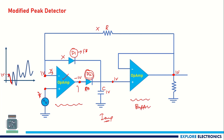As the input reaches the next peak, diode D2 becomes forward biased again and D1 becomes reverse biased. This process continues and finally we can identify the peak of the input signal as 5 volts. This is how the modified peak detector works. Thank you.